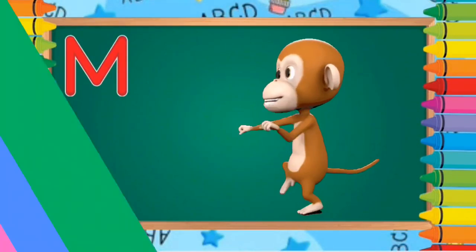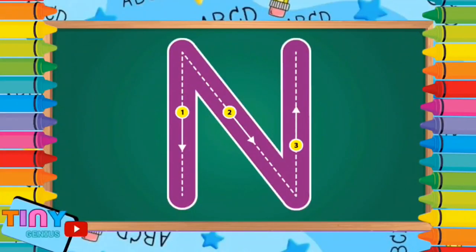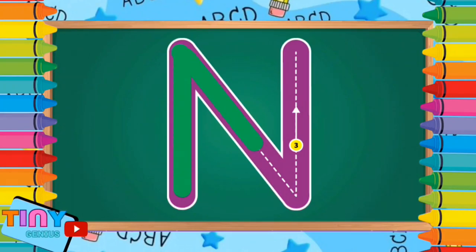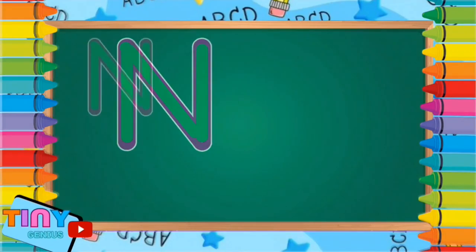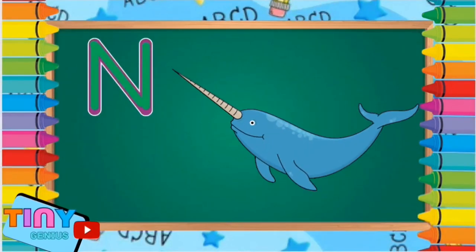Let's write the next letter, the letter N. Pull down, slant down, pull up. N is for narwhal.